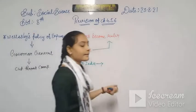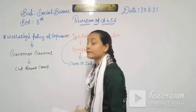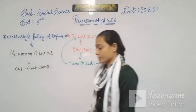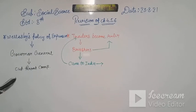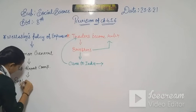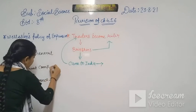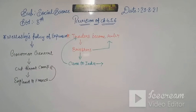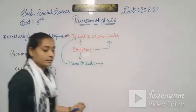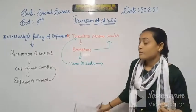The cutthroat competition existed between which countries? England and France. Between these two countries there was cutthroat competition. Then British rule in India became powerful. Why did they become powerful? Because the Governor General of India — that is Wellesley — introduced a system.